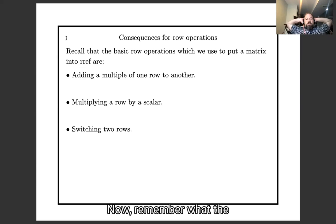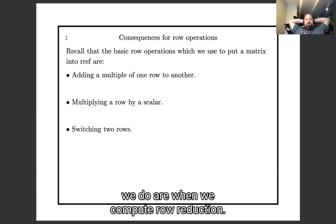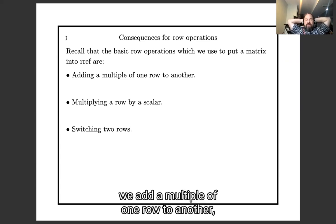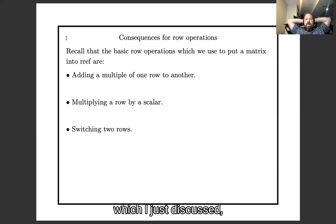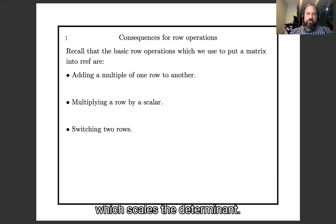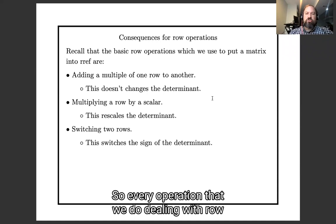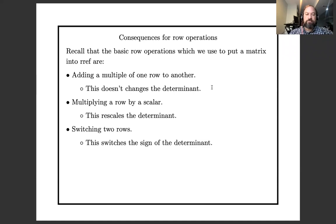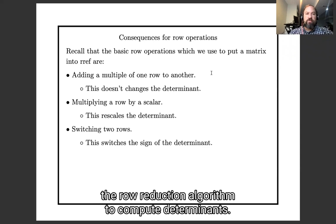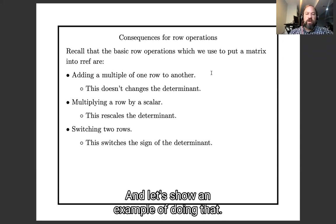Now remember what the basic operations that we do are when we compute a row reduction. When we compute a row reduction, we add a multiple of one row to another, which as I just discussed doesn't change the determinant. We multiply a row by a scalar, which as I just discussed rescales determinant, and we switch two rows, which switches the sign of a determinant. So every operation that we do during row reduction changes the determinant in a very simple, predictable way. Which means that we could use the row reduction algorithm to compute determinants. And let's show an example of doing that.